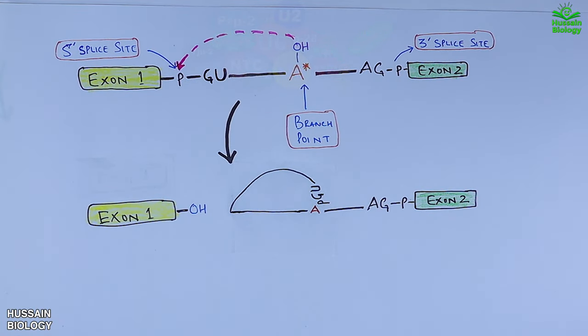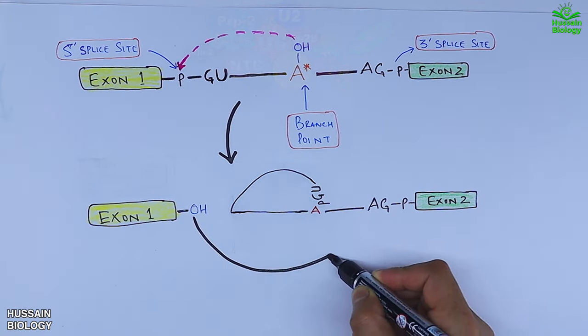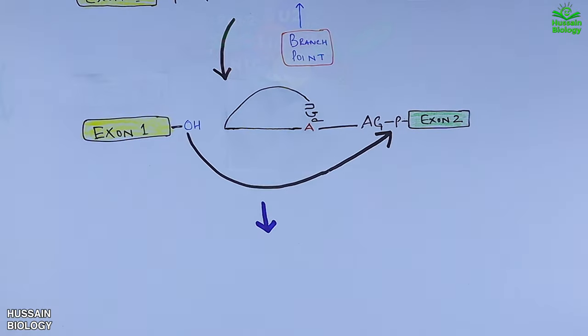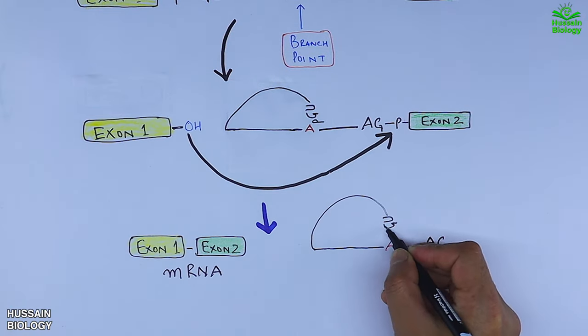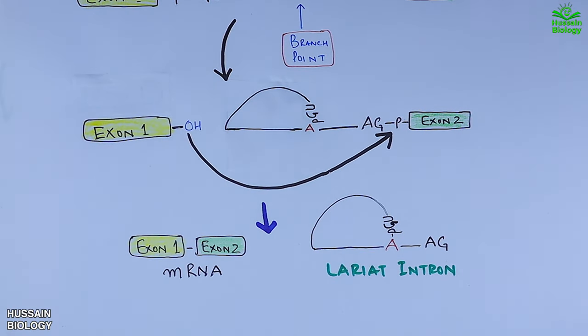In the next step, spliceosome splices at the AG site, which is upstream of AG at the 3 prime end, where OH of exon 1 attacks the splice site. From this reaction we get the ligation of two exons. So we have now the complete mRNA molecule, and we have excised the intron out in the lariat form. So this is how the catalysis is mediated.